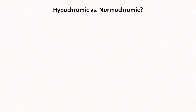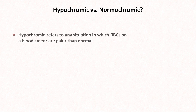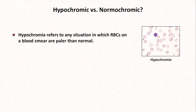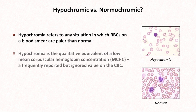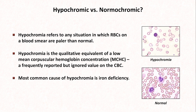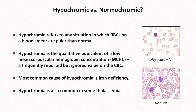One of the first things to comment on is whether the smear looks hypochromic or normochromic, which refers to the color and degree of paleness in the red blood cells. Hypochromia means the RBCs look more pale than normal, which is a consequence of a decreased amount of hemoglobin, as oxygenated hemoglobin is what is responsible for the red color of an RBC. Hypochromia is the qualitative equivalent of a low mean corpuscular hemoglobin concentration, a frequently reported but generally ignored value on the CBC. The most common cause of hypochromia is iron deficiency, but it can also be seen in some thalassemias.